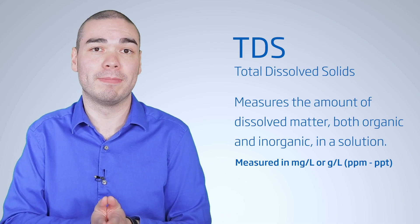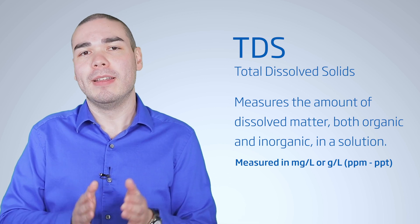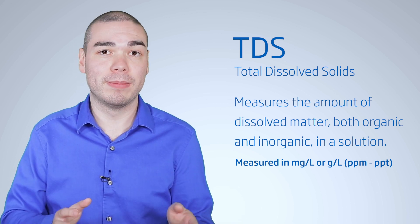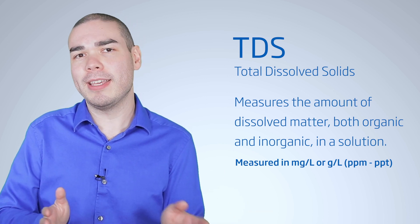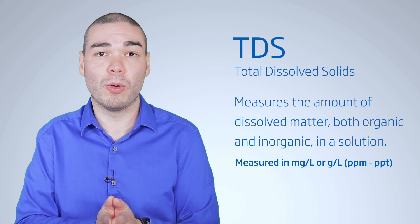You may also have more than one ion in a solution, and the EC measurement will not differentiate. One EC measurement is called TDS, total dissolved solids. This measures the amount of dissolved matter, both organic and inorganic, in a solution. TDS results are in milligrams per liter or grams per liter. Just remember, electrical conductivity is directly related to the concentration of the ionic dissolved solids.